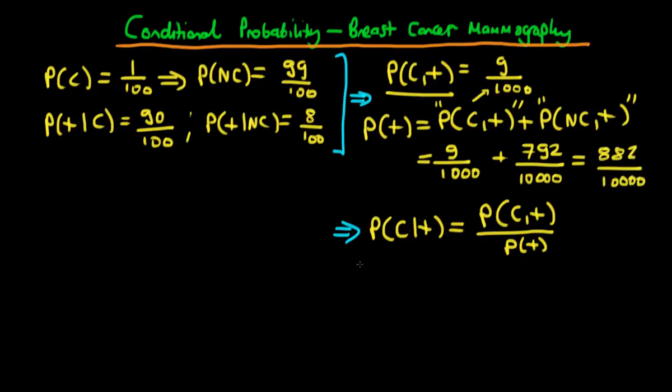Then if we put all this together to work out the probability that an individual who tests positive actually has cancer, we know the numerator is just 9 over 1,000, and the denominator is 882 over 10,000. If you put this into a calculator, you'll get something approximately 0.1.